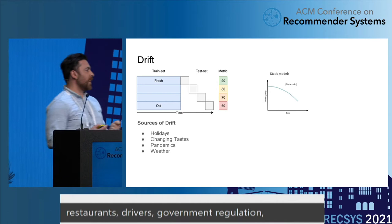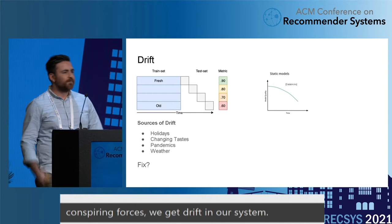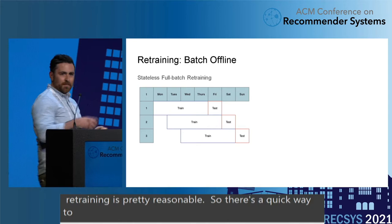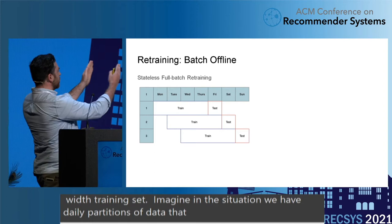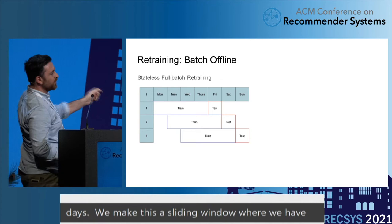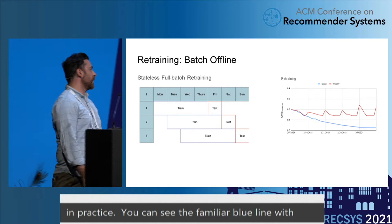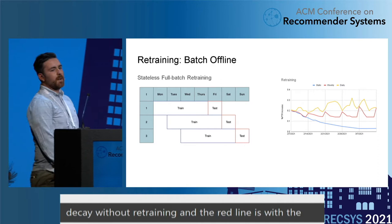What's a quick fix for this? Retraining is pretty reasonable. You take a fixed-width training set — in our case daily partitions of data, and we found we could get to convergence with four days. We make a sliding window where on the y-axis we have different rounds of training, shifting the window once each time. You can see the familiar blue line with decay without retraining, and the red line with weekly cadence of retraining showing respective decay and recovery. This also works well for daily retraining.